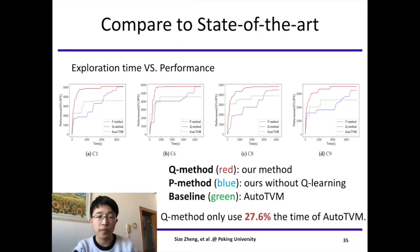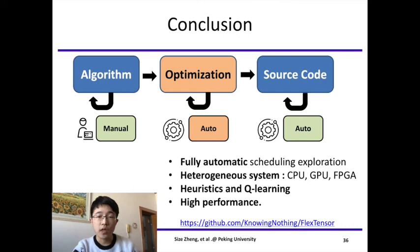In conclusion, we design and implement a fully automatic optimization framework for scheduling exploration on heterogeneous systems. We use heuristic and Q-learning to perform efficient exploration. We achieve high performance on CPU, GPU, and FPGA. Our work is available on GitHub. That's all. Thank you.